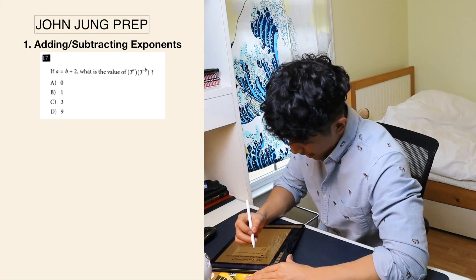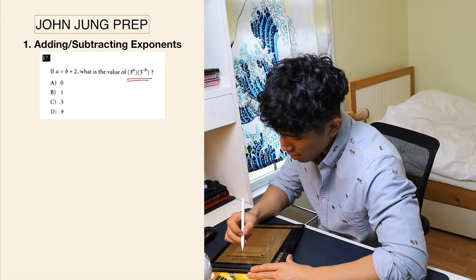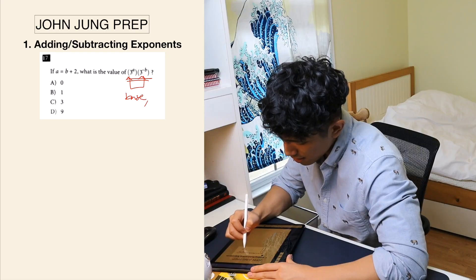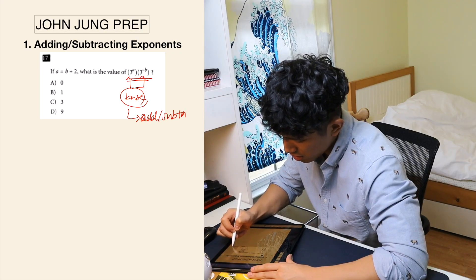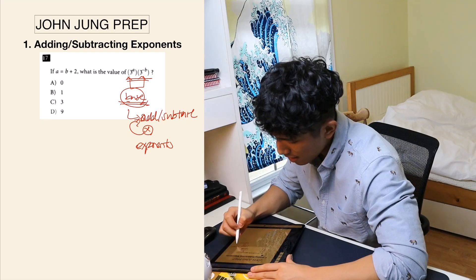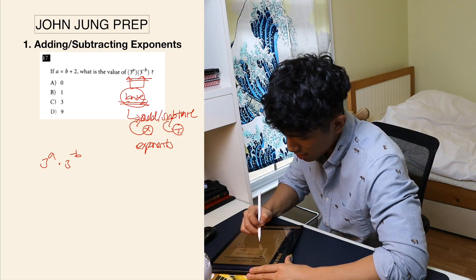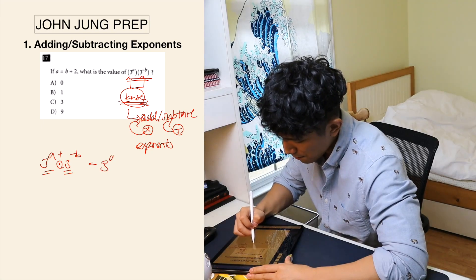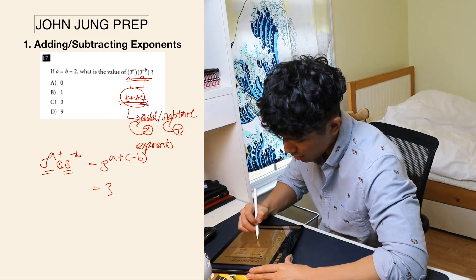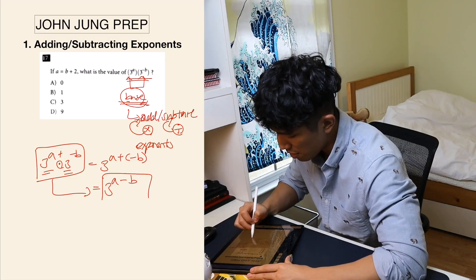The question asks: a = b + 2. What's the value of 3^a × 3^(−b)? You see how these two numbers are sharing the same base. When the bases are the same and you're multiplying, you add the exponents; when you're dividing, you subtract the exponents. So 3^a × 3^(−b) becomes 3^(a + (−b)), which simplifies to 3^(a − b).